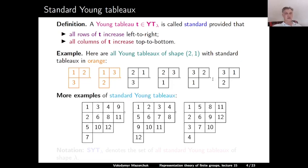Here are further examples of standard Young Tableaus of shape (4,4,3,1). One such tableau has 1,3,4,9 in the first row; 2,6,8,11 in the second row; 5,10,12 in the third row; and 7 in the fourth row. We can verify that all rows and all columns increase.